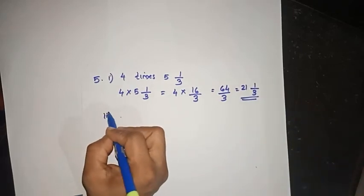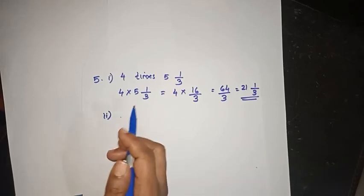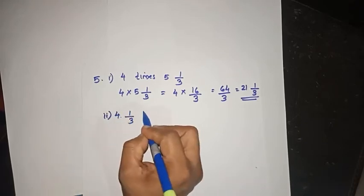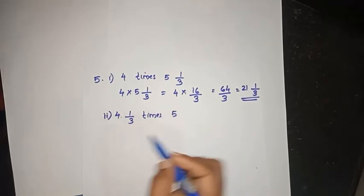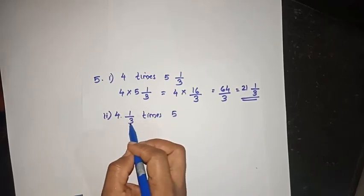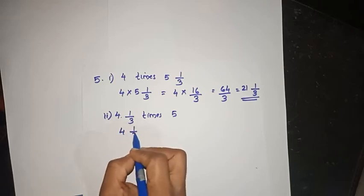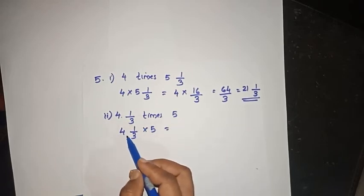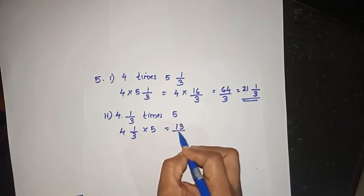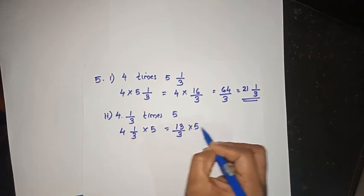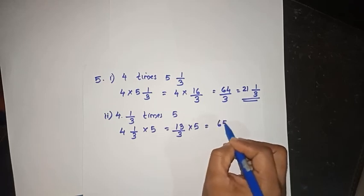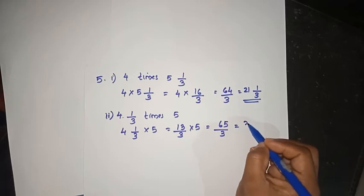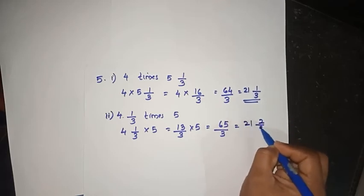Second question: 4 and 1 by 3 times 5. Convert 4 and 1 by 3: 4 times 3 is 12, plus 1 is 13 — so 13 by 3 into 5 equals 65 by 3, which is 21 and 2 by 3.